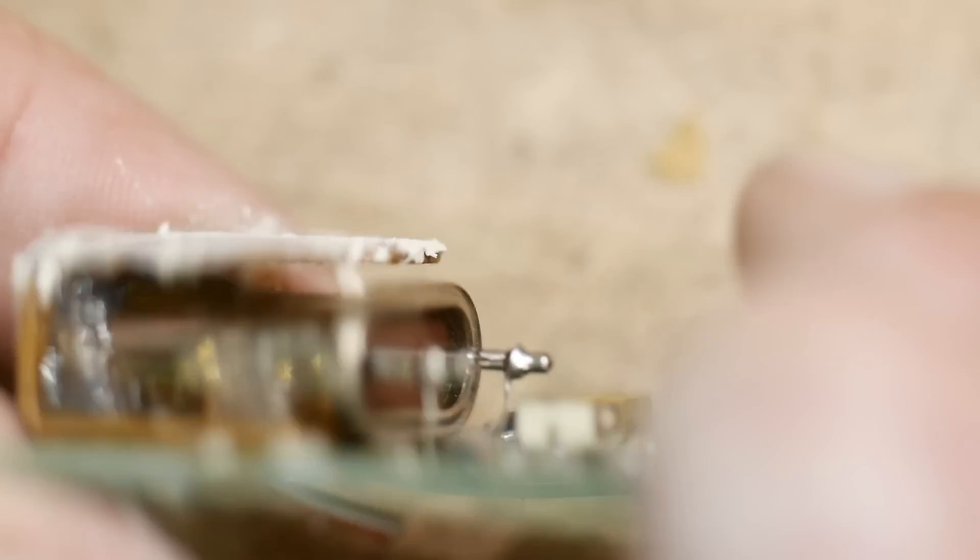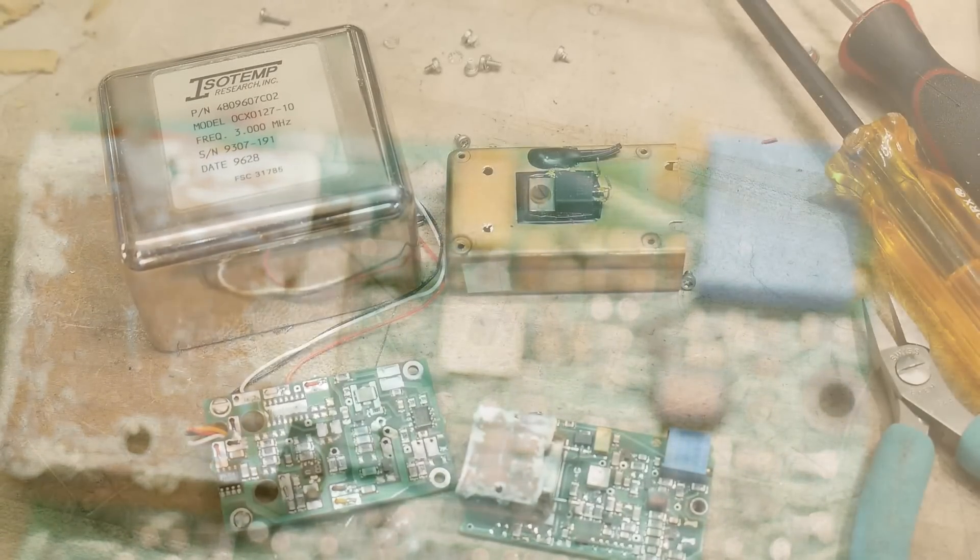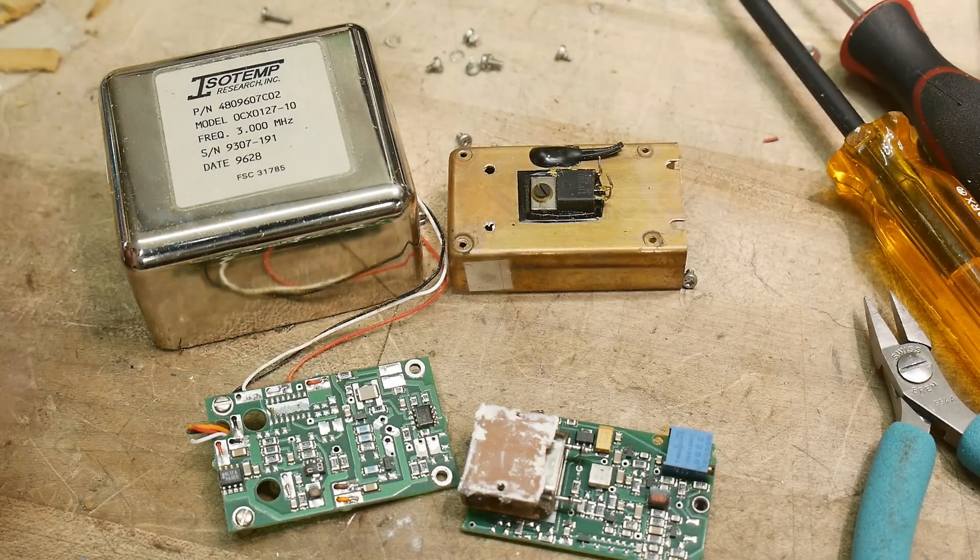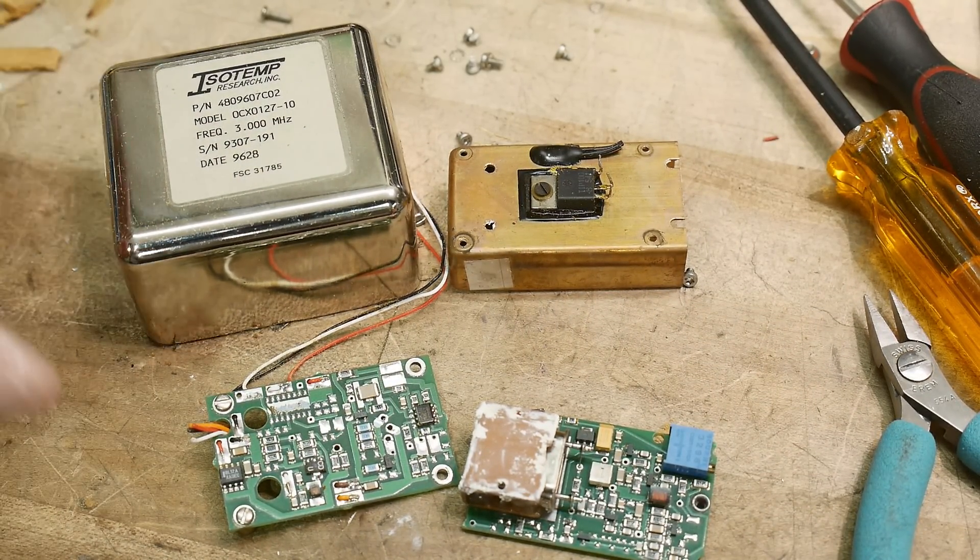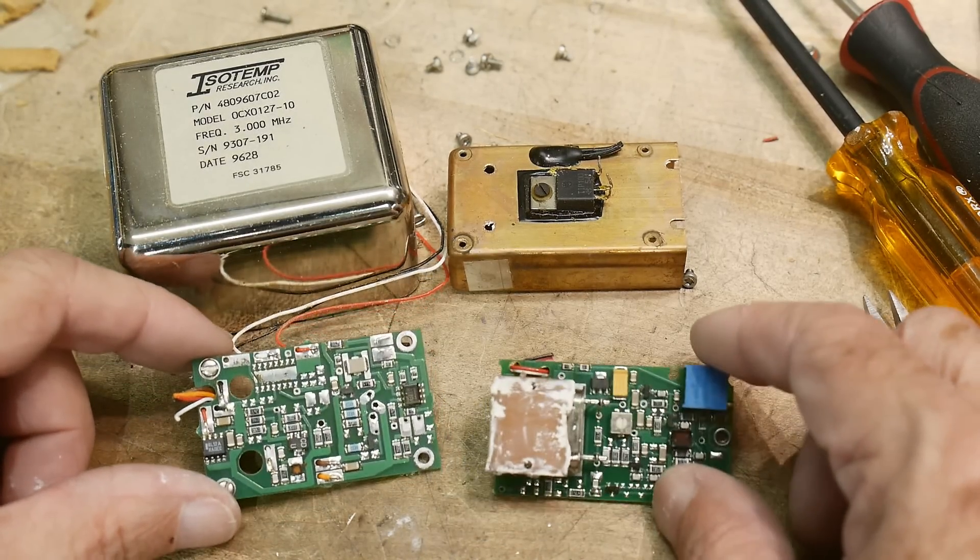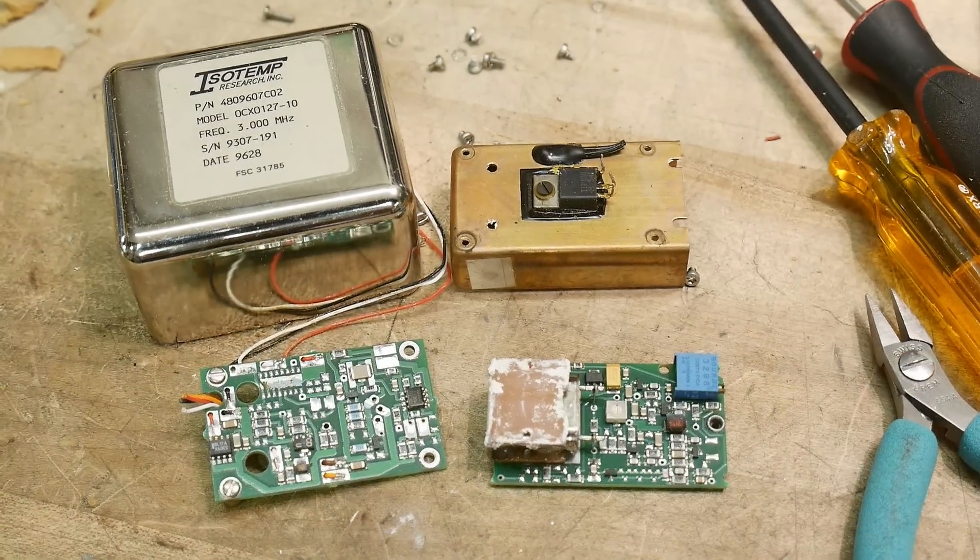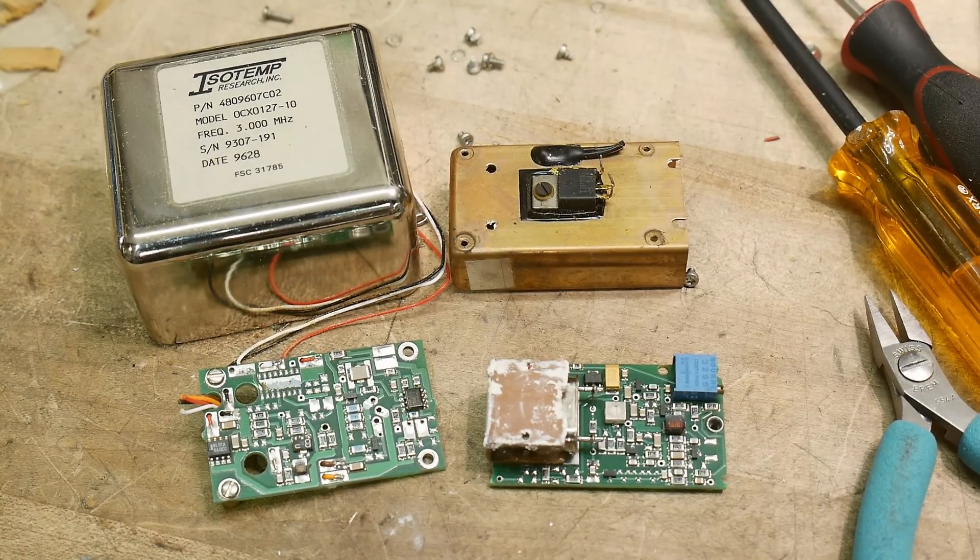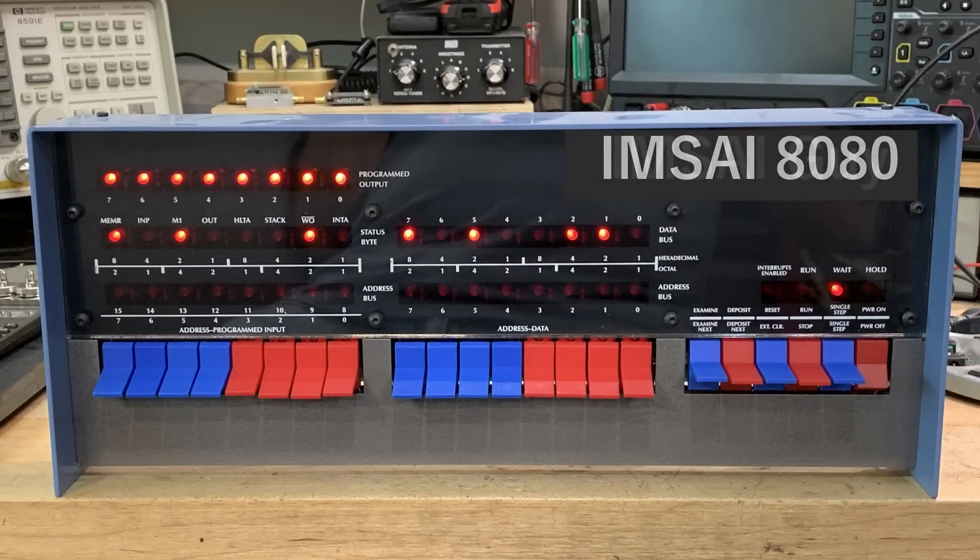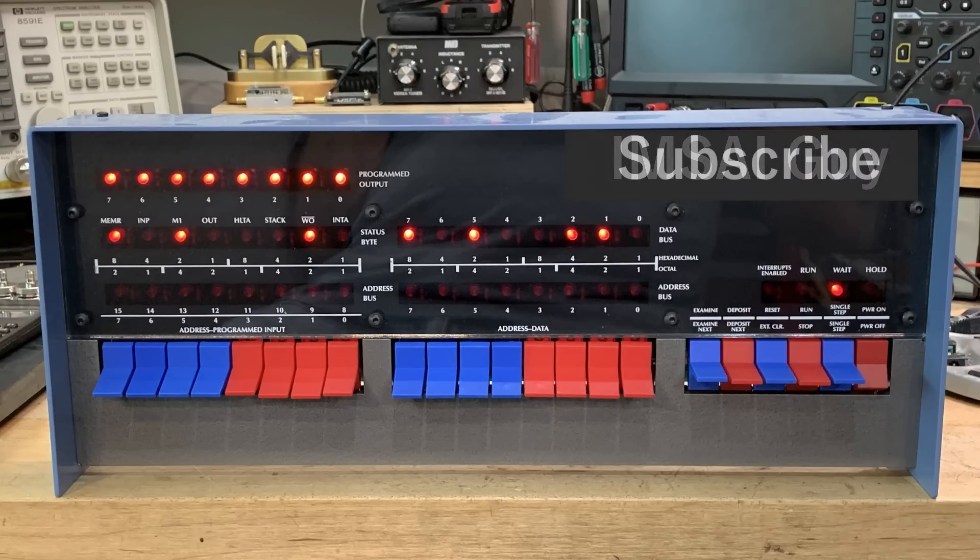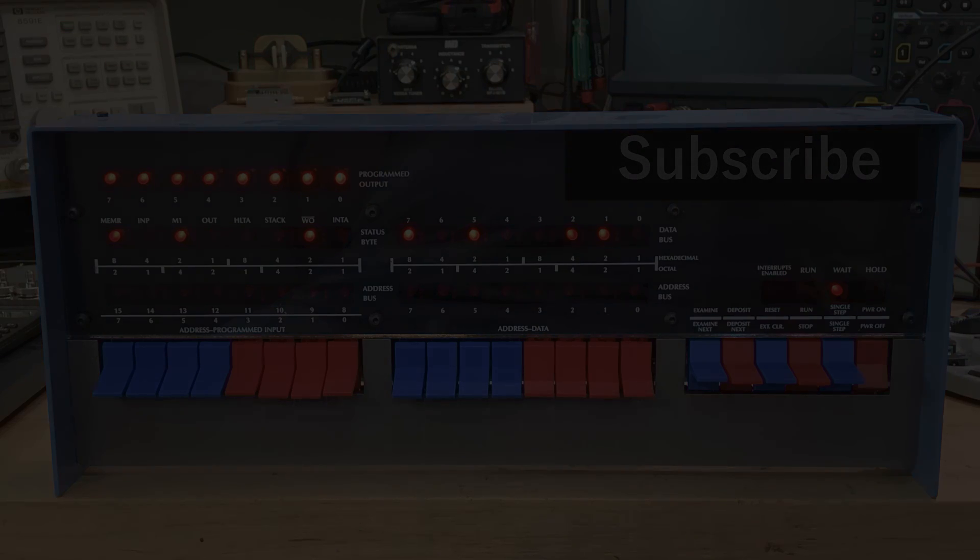But yeah, there you go. There's nothing on the backside of these boards. So there was a quick teardown of an isotemp oven controlled oscillator. Oven crystal controlled oscillator. And all the goodies inside. It's pretty complicated. It's probably why they charge a lot of money for them. Bye now.